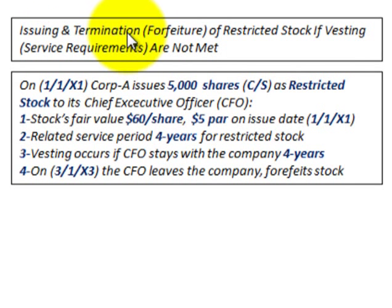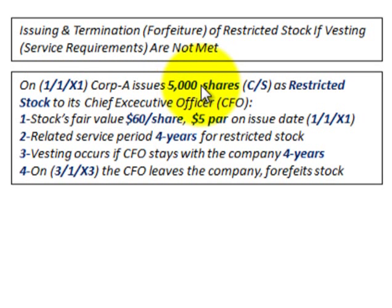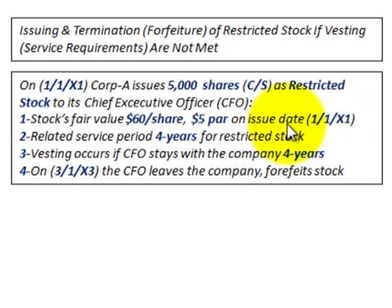We're going to be going over the issuance and termination or forfeiture of restricted stock — the case where vesting or service requirements are not met. On 1/1/X1, Corporation A issues 5,000 shares of its common stock as restricted stock to its chief executive officer. The stock's fair value is $60 per share with a $5 par value at the issue date, related to services for a four-year period. The vesting occurs if the CFO stays with the company for four years.